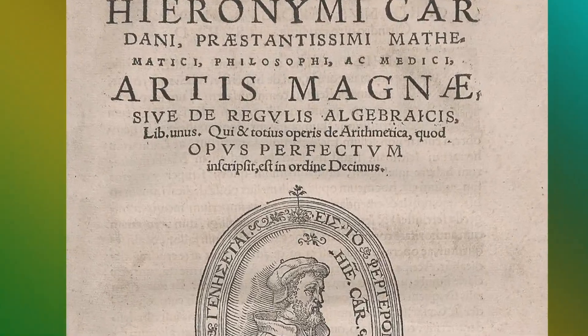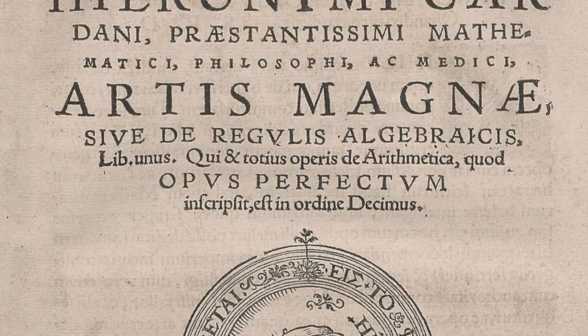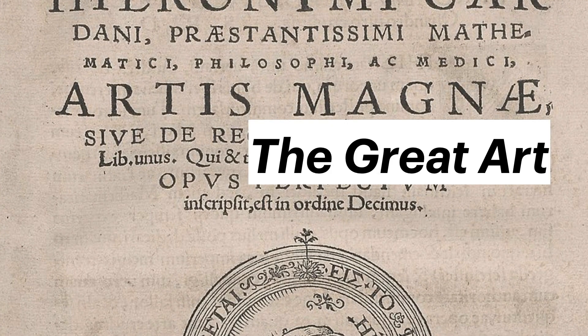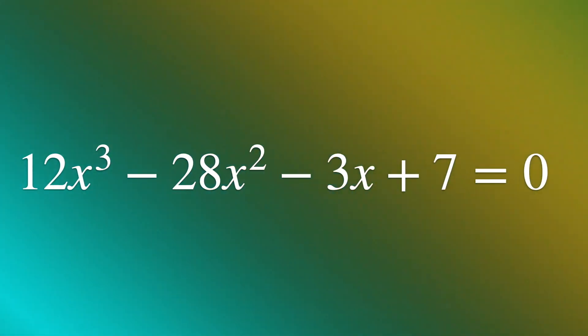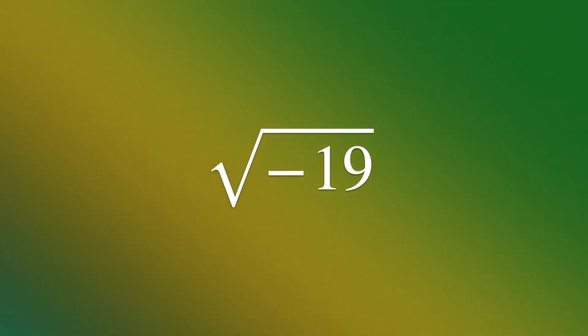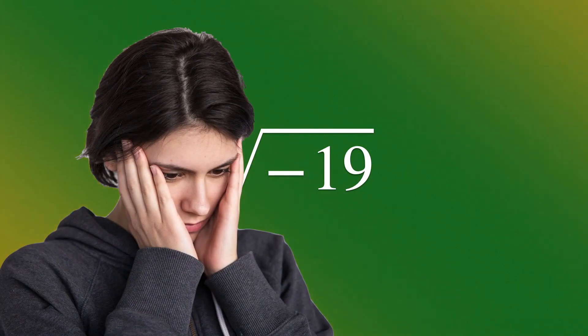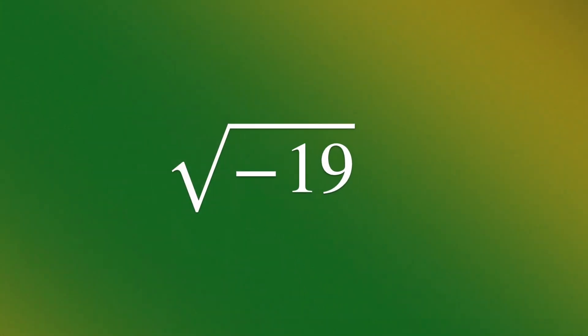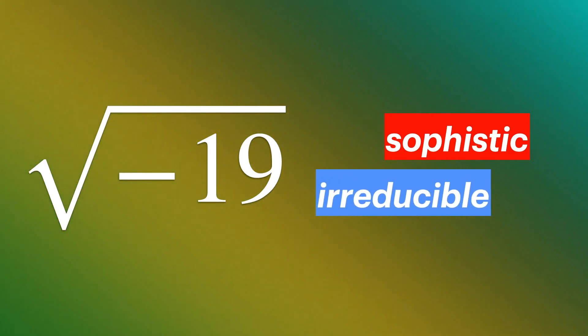In his book Ars Magna, or The Great Art, published in 1545, Cardano discussed solutions to cubic equations. When solving certain cubic equations, Cardano encountered square roots of negative numbers, which he referred to as sophistic or reducible roots. These roots did not have a clear geometric interpretation at the time, and Cardano treated them as mathematical entities without a real-world counterpart.